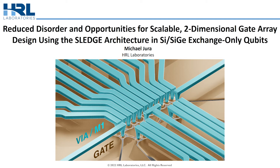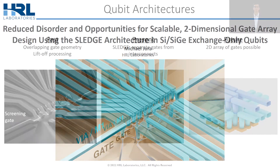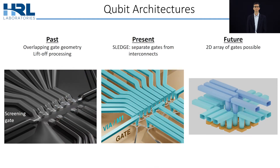This new architecture we call SLEDGE is a significant change from how we and much of the community used to fabricate qubits. Previously, we employed a liftoff overlapping gate architecture, which constrained quantum dots to rings or two parallel rows of dots. Now, in SLEDGE, we separately fabricate gates and interconnects. This will enable future designs where we can imagine multiple rows of quantum dots or 2D arrays of gates enabled by these back-end interconnects.